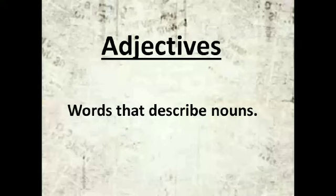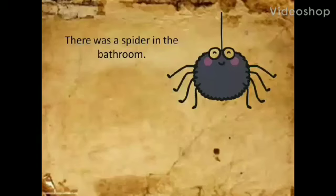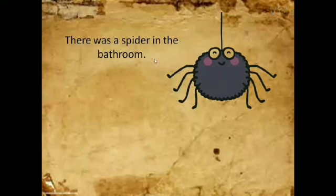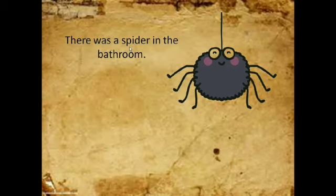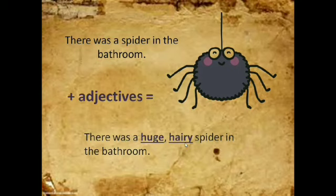What is an adjective? It's a word that describes a noun. It gives you more information about the noun — tells you more! For example, here's a sentence: there was a spider in the bathroom. Can you find the noun? That's right, it's spider! Now, can you use adjectives to describe the noun spider? Here's what I got: there was a huge, hairy spider in the bathroom. Huge and hairy are adjectives that describe the noun spider.